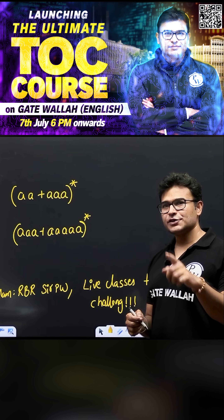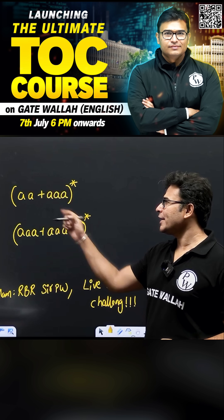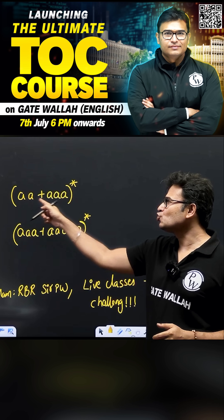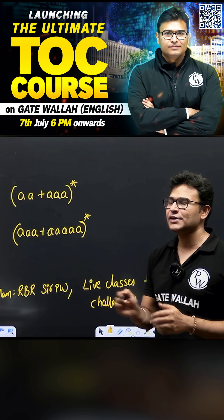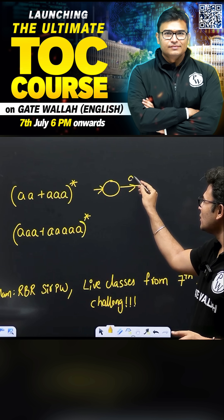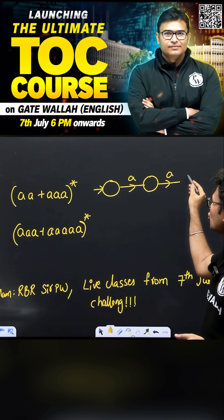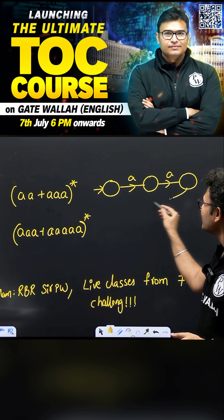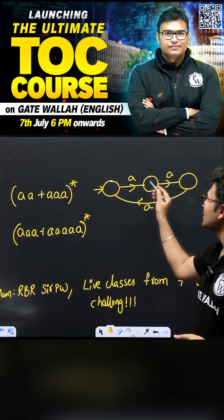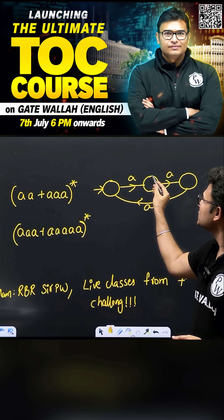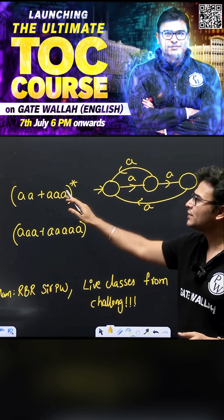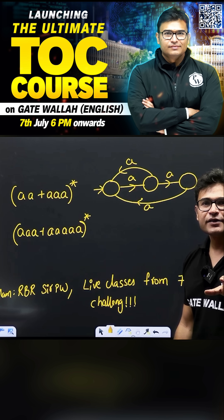If they ask you how to draw an NFA for this language, it is very simple. The language is 2 a's OR 3 a's. So I'll put: one, two — there is a loop for three a's — one, two, three — three a's. And then there is a loop for two a's. This is the NFA for this language.